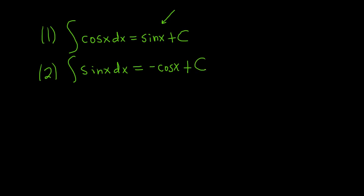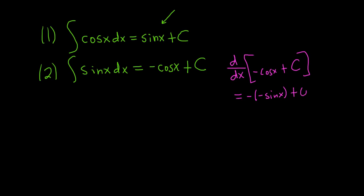Let's check this. If you take the derivative with respect to x of the right-hand side, we should get the integrand, which is sine x. The derivative of cosine is negative sine, so we get negative negative sine. The derivative of C is zero. Negative and negative is positive, so we just get sine x — it certainly checks. So when you're integrating sine, you ask yourself what is a function whose derivative is sine? The derivative of cosine is negative sine, so you need a negative cosine, because the negatives cancel and give you sine.